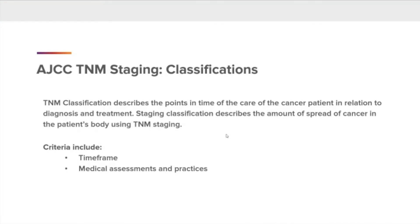AJCC TNM staging classifications. TNM classification describes the points in time of care of the cancer patient in relation to diagnosis and treatment. Staging classification describes the amount of spread of cancer in the patient's body using the TNM staging. The criteria does include time frame, medical assessments, and practices.